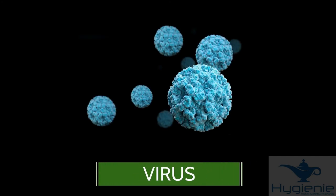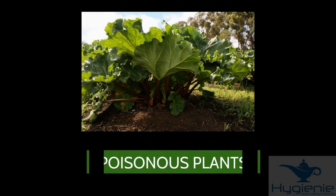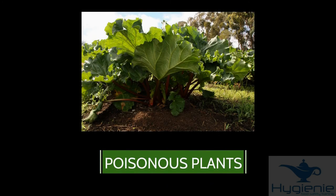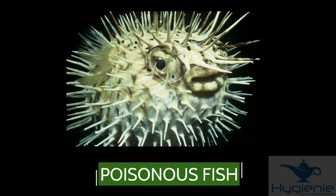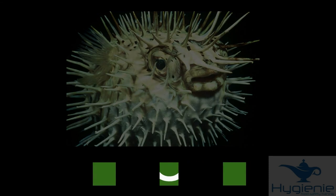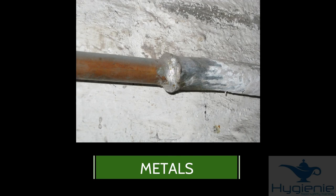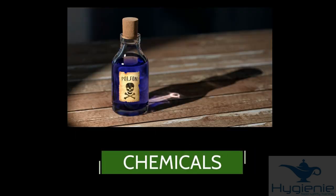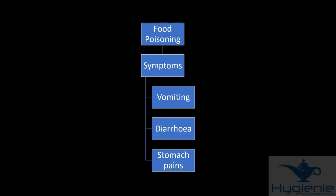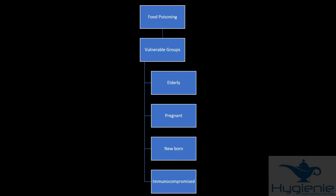Besides bacteria, there are other causes of food poisoning: viruses, poisonous plants such as rhubarb leaves, poisonous fish, metals, chemicals. What are the symptoms of food poisoning? The main symptoms of food poisoning are vomiting, diarrhoea and stomach pain. A particular concern are vulnerable groups. These are the groups of people more likely to be susceptible to food poisoning. They include the elderly, the pregnant, the newborn and those who are immunocompromised or already ill.